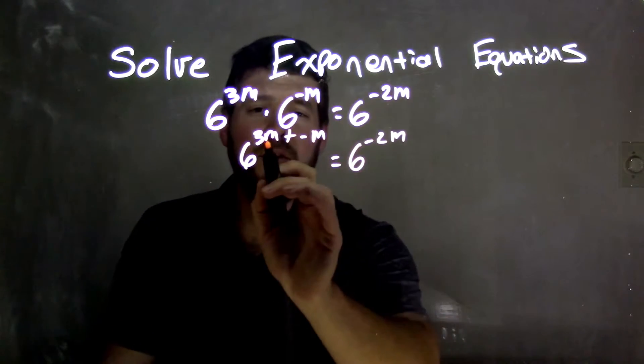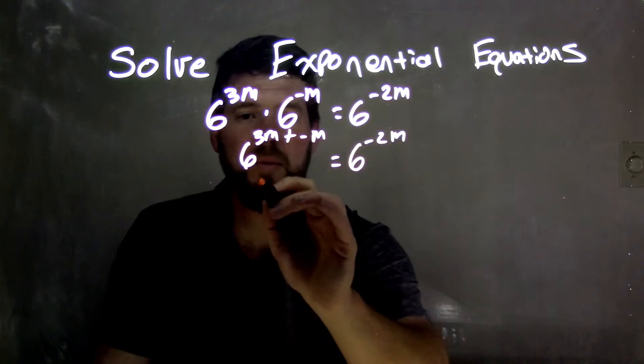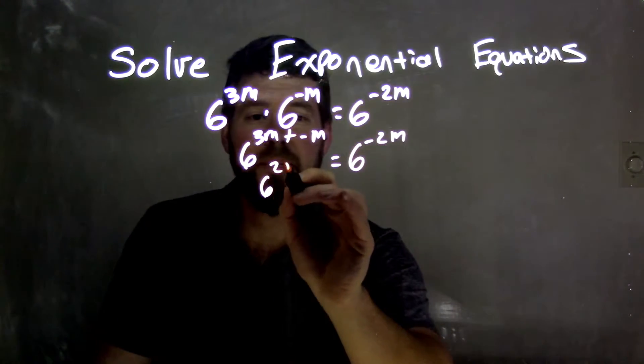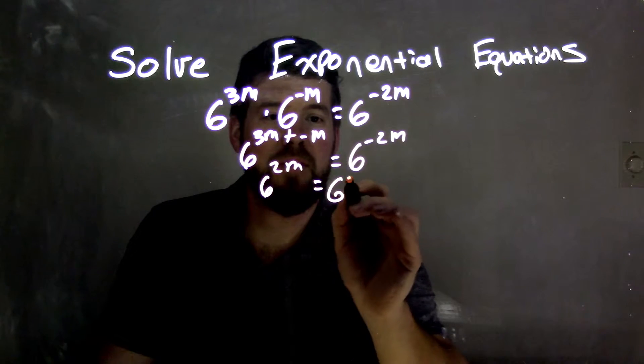From there, I'd like to simplify my exponents when possible. I have 6 to the 3m plus negative m, which is 2m, and that equals 6 to the negative 2m.